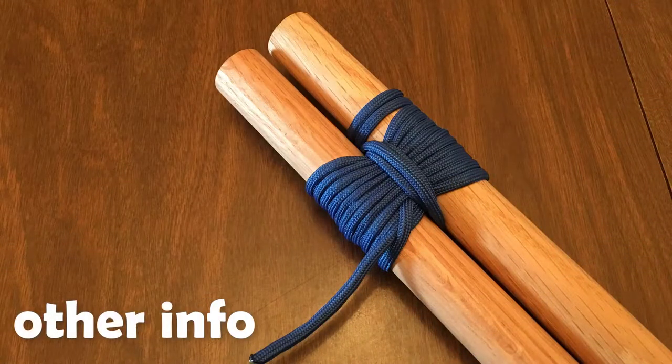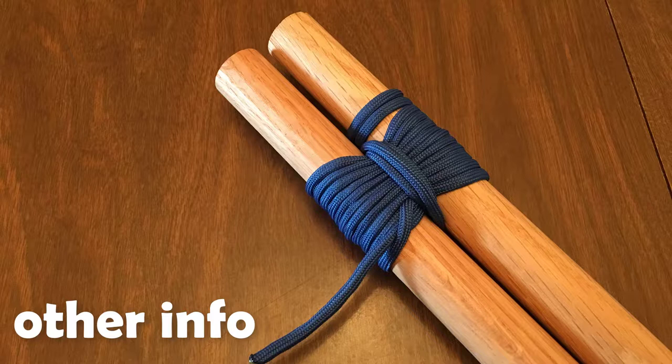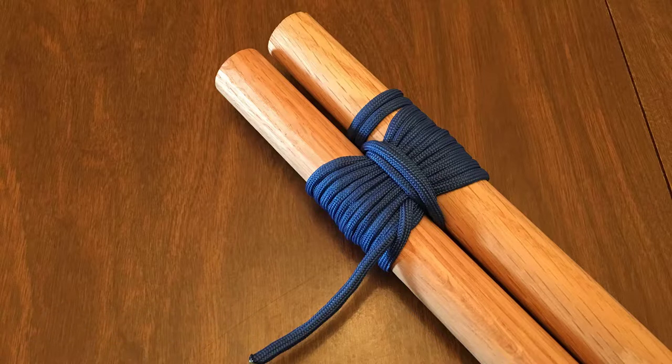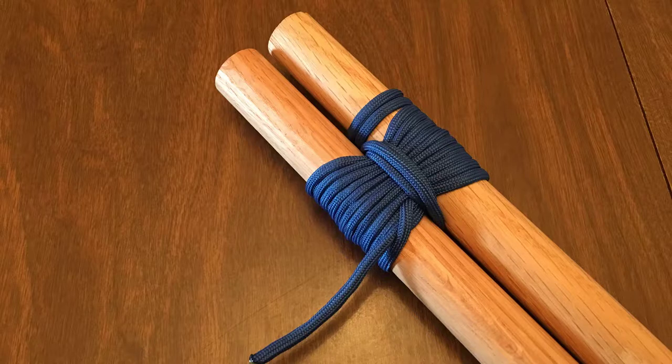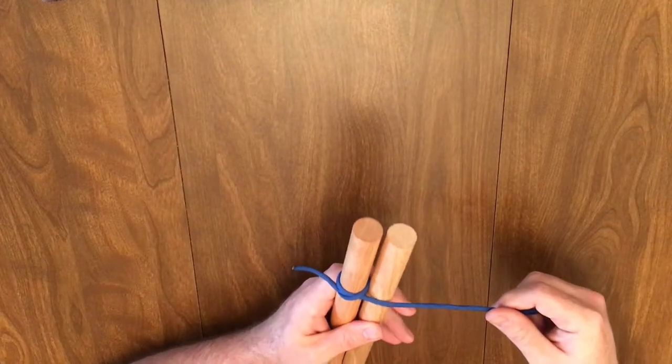The way we tied this previously uses what is known as normal turns for the wrapping turns. Another variation that is a bit tighter is with racking turns. To do this, start just as you did before.